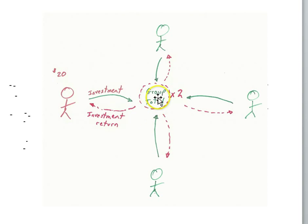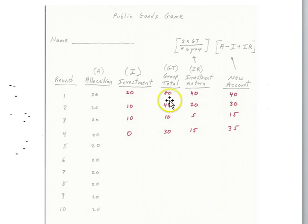So when four people are investing twenty dollars that's going to be eighty dollars in the group total. The eighty dollars then is going to be doubled and then divided by four and that'll give you forty dollars. So the eighty times two is 160 divided by four players is going to be forty dollars. So your investment return is forty dollars.